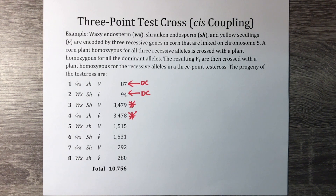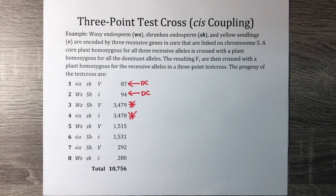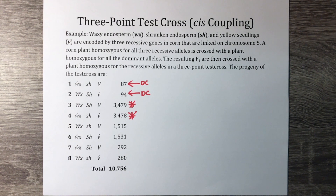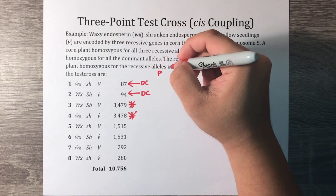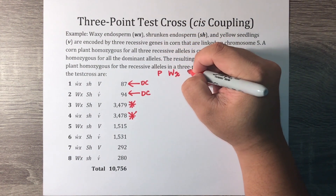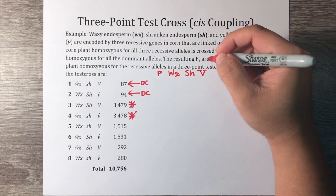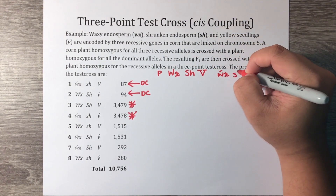We already know what the parental and double recombinant configurations are. Three orders of genes are possible: WX-SH-V, SH-WX-V, and WX-V-SH. To determine which gene is in the middle, we can draw the chromosome of the heterozygous parent with all 3 possible gene orders and then see if a double crossover produces the combination of genes observed in the double crossover progeny. In the double crossover, the two outer alleles are the same as in the non-recombinants, but the middle allele is different.